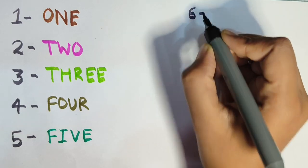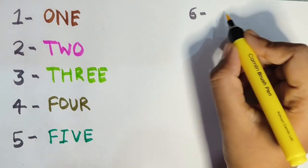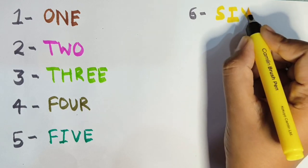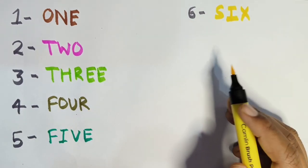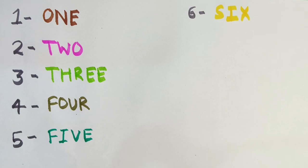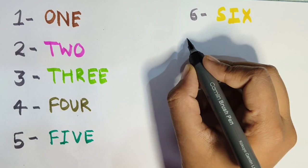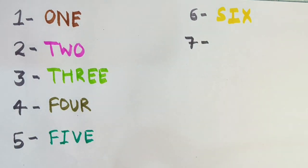The spelling of six is S-I-X. S-I-X. Six. Okay, next is seven and the spelling of seven is S-E-V-E-N.